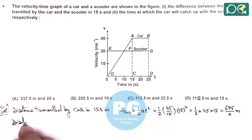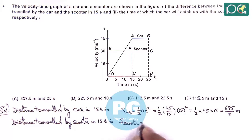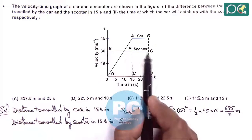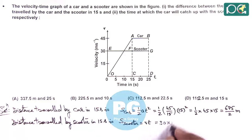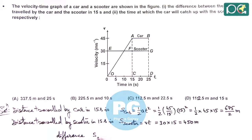The distance travelled by the scooter in 15 seconds is S_scooter. Since the scooter is travelling at a uniform speed, this is simply V×t = 30 multiplied by 15, which gives 450 meters. The difference asked in the question is S_scooter minus S_car: 450 minus 675/2, which simplifies to 112.5 meters.